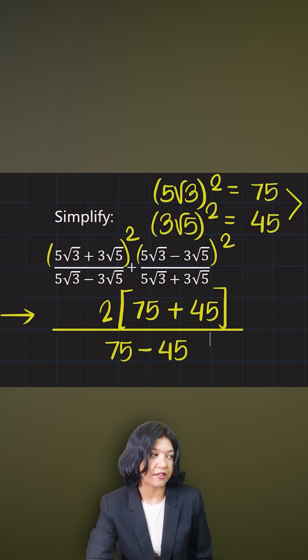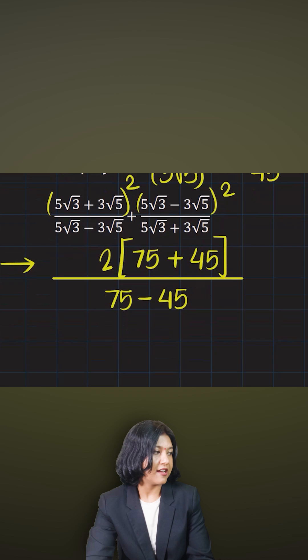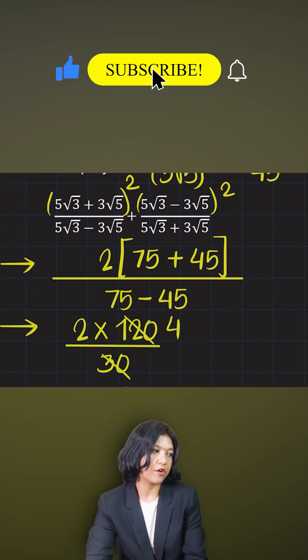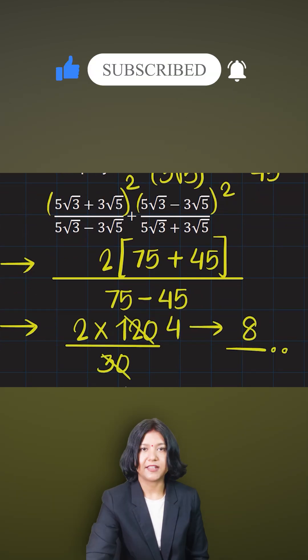Okay, now this is the quickest way you actually approach a question. And hence, you can find your answer in no time. 75 plus 45 is 120. And at the bottom, what you have is just 30. So 30 into 4 is 120, 4 into 2, answer is 8. That's it.